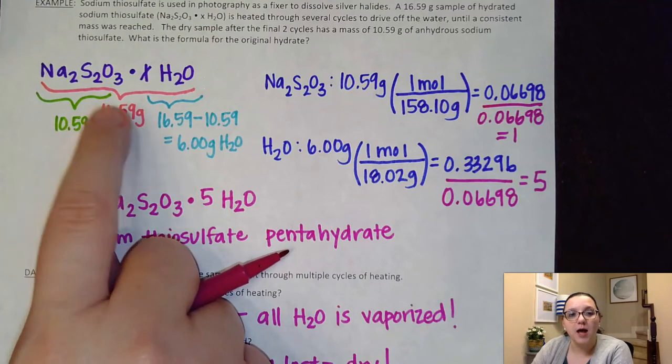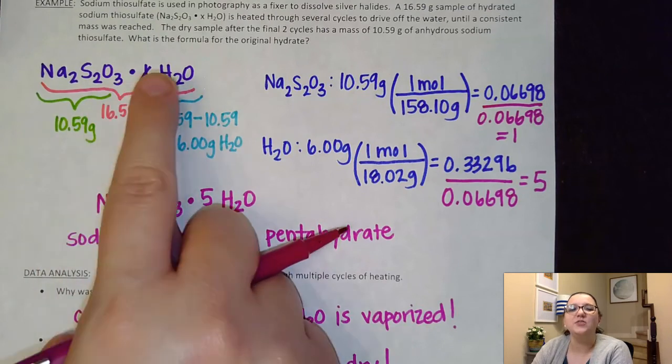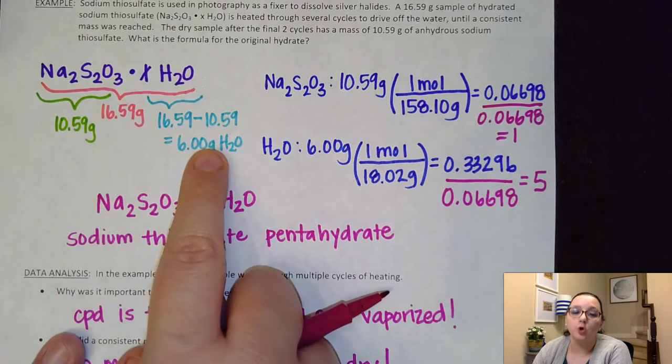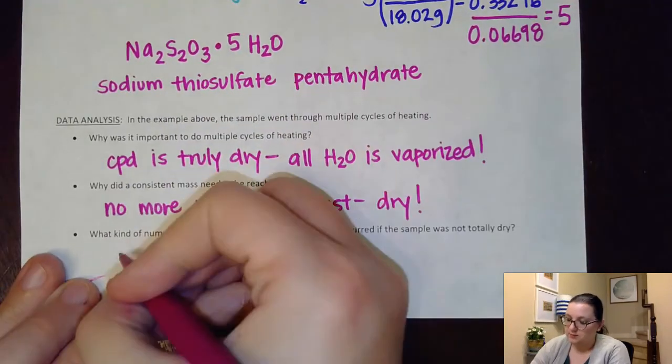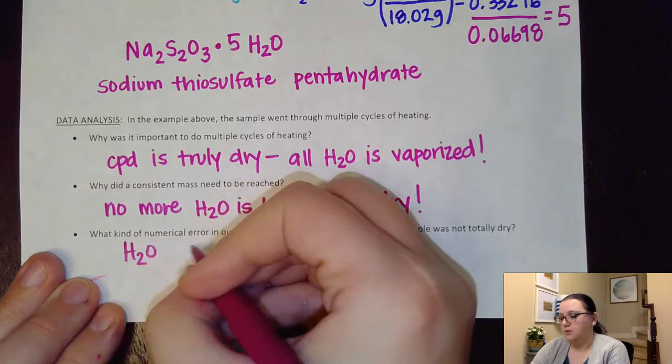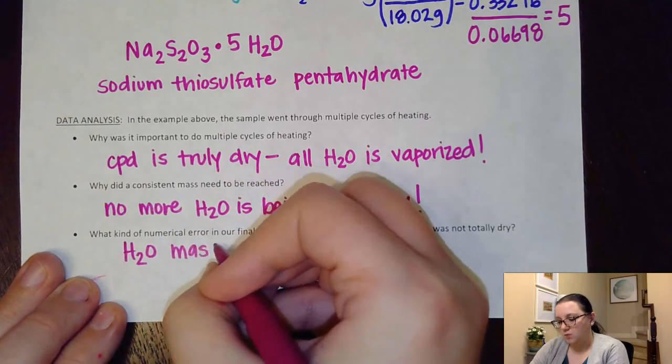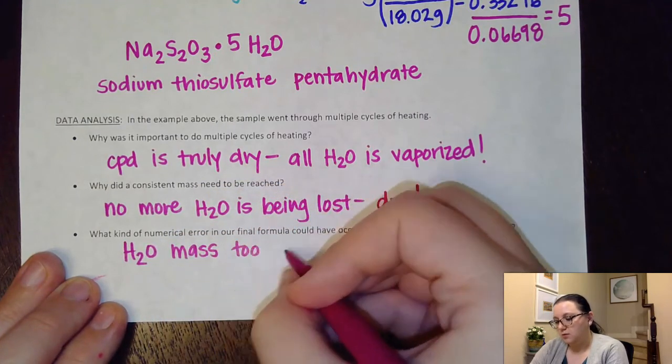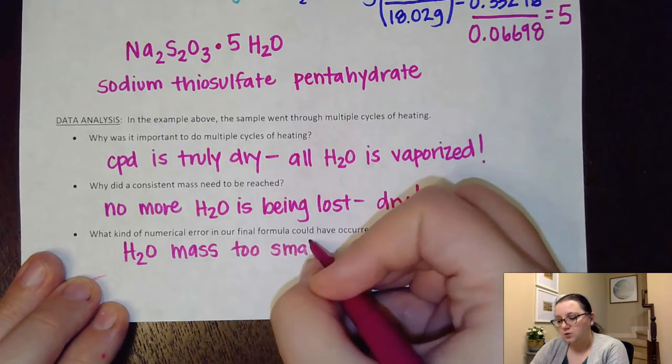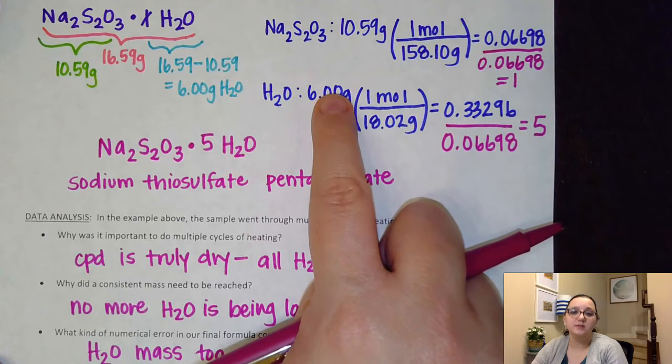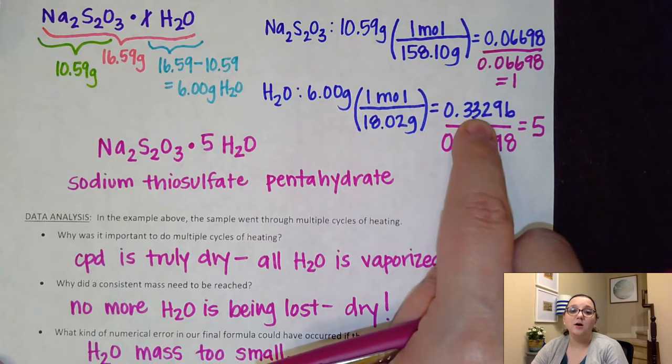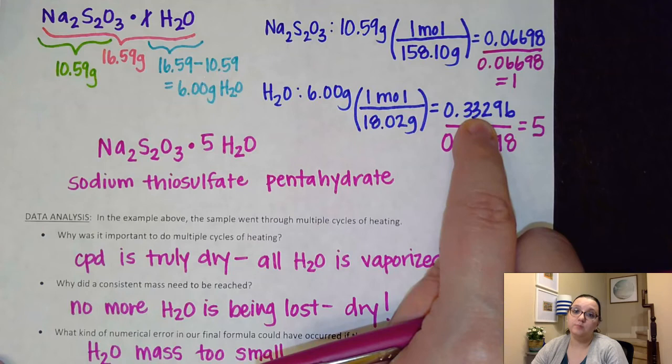Well, if that number was too big, then when I subtracted off, what that would mean is that the water mass would look too small. So if the water mass is too small, then think about what that would do. When I get to these calculations here, if this number is too small, then our number of moles ends up too small.